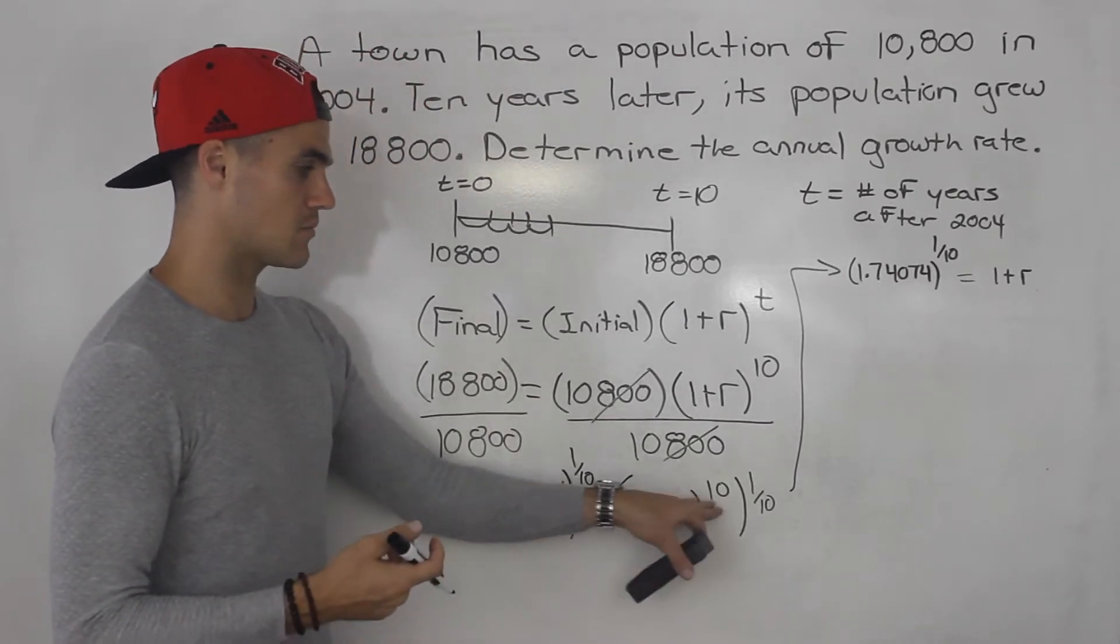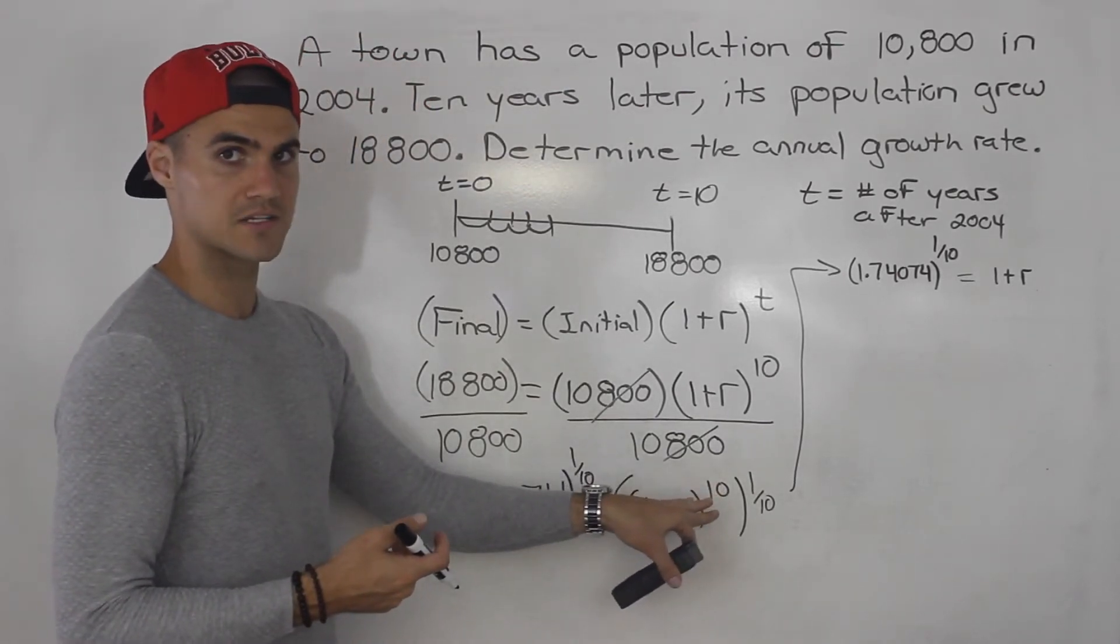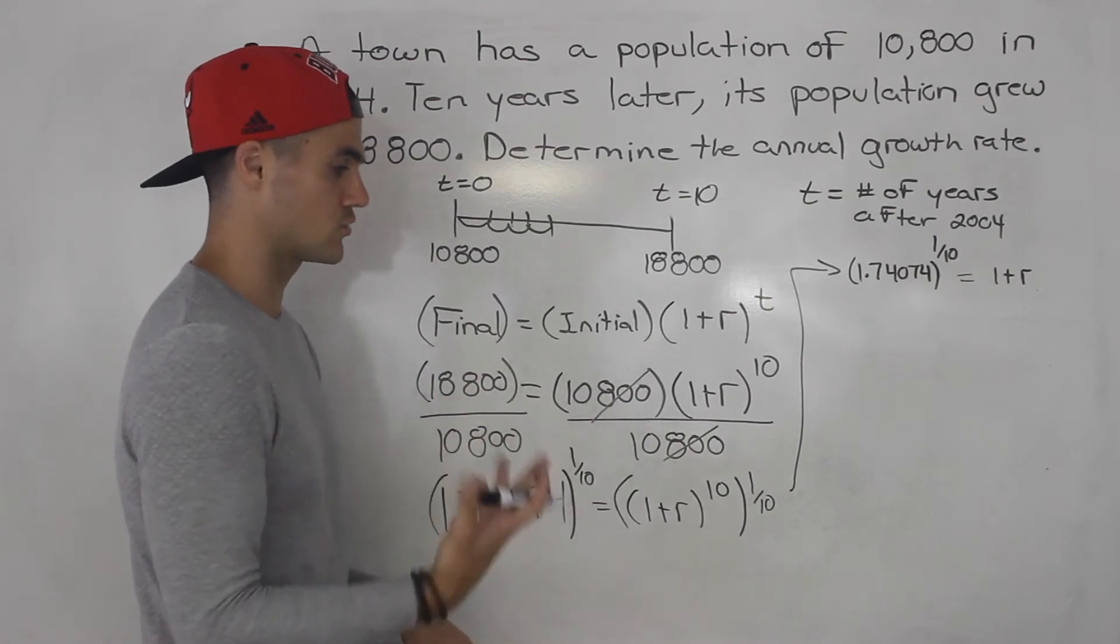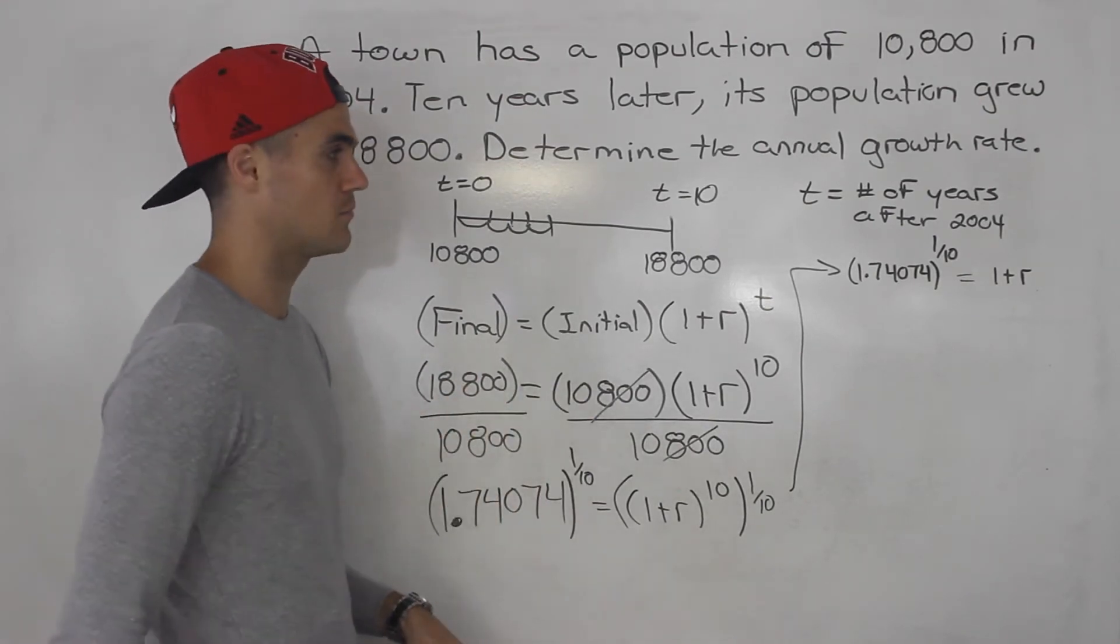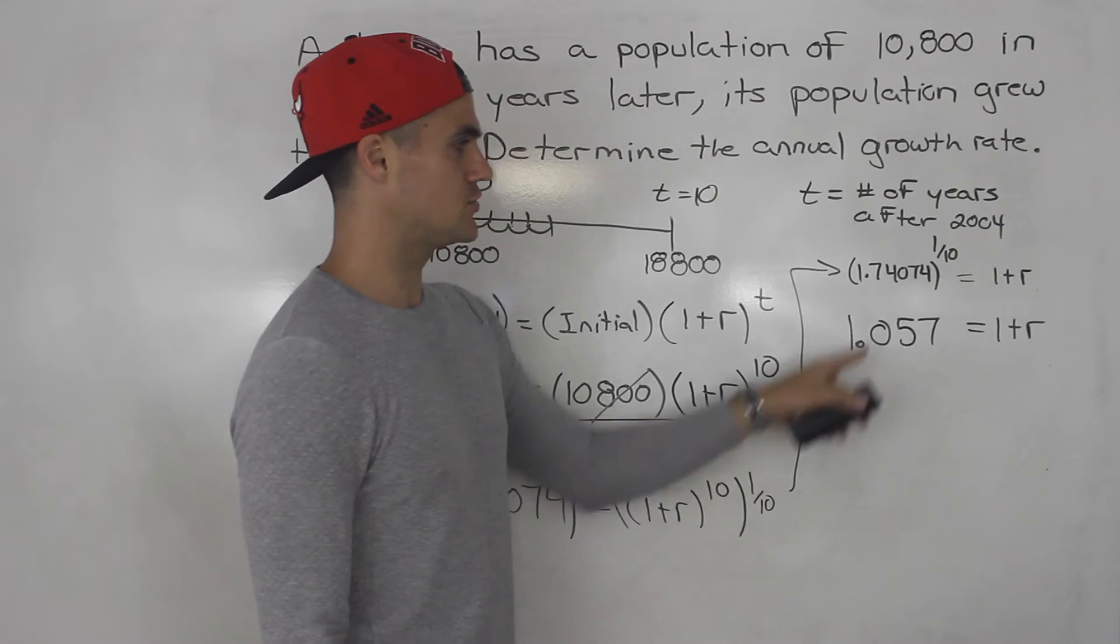If we're taking something to the power of 10, and we want to get rid of that exponent, we would take both sides to the root 10, the 10th root of both sides. Now when you do this in your calculator, you would get 1.057.